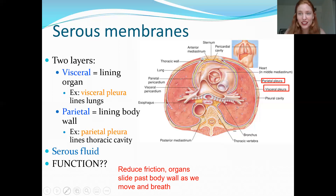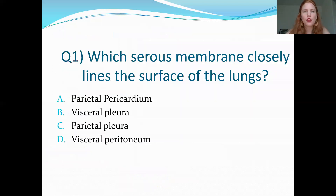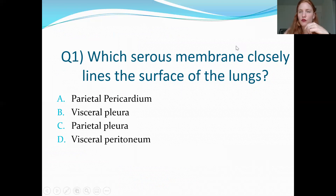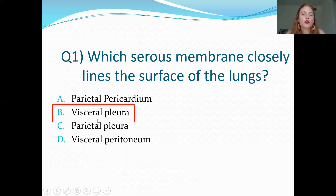The function of reducing friction applies to all serous membranes — learn it now because it will come up over and over again. The serous membrane that closely lines the exterior surface of the lungs is the visceral pleura — 'visceral' meaning lining the organ, and 'pleura' related to the lungs.